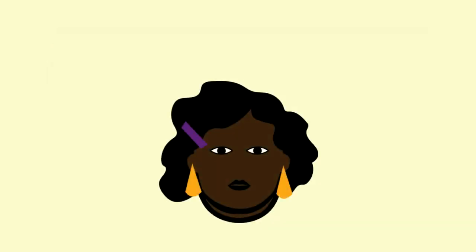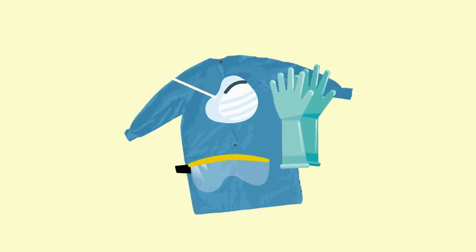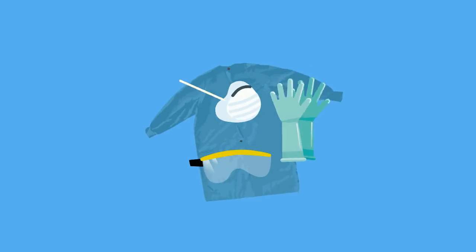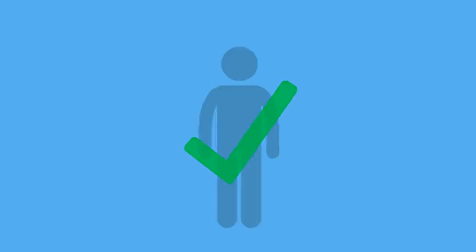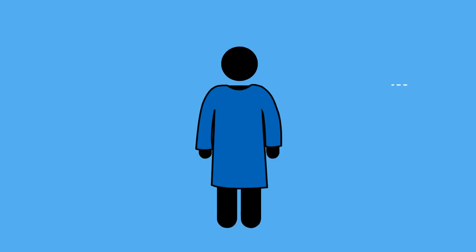To begin dressing, ensure you remove all jewelry and personal items and that long hair is tied back. Make sure you are using appropriate PPE for the precautions needed. Step one is to perform hand hygiene. Then ensure the PPE is not damaged. Put on the gown first — tie around the neck and around the waist and secure it around the back.